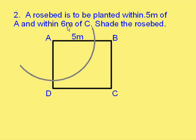But it's also got to be within six metres of C. So, we draw a circle of radius six with C as the centre. And now it's the region which is in both of those areas. So, we have to shade that to get this little lozenge of green there.